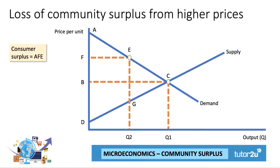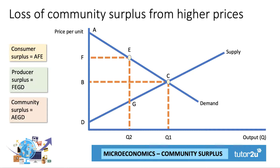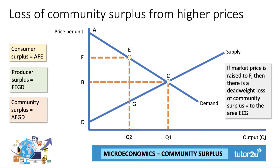In this situation, consumer surplus goes down — it falls to the area AFE, the area beneath the demand curve and above the price. There's been a squeeze of consumer surplus, but the producer is now benefiting, with an area of producer surplus FEGD. The producer has gained at the expense of the consumer. But the total community or social surplus is now area AEGD, which means that if the market price is raised to F, there's going to be a deadweight loss of community surplus equal to the area ECG. That's a loss of welfare because output has been restricted to Q2 and the price has gone up to F.